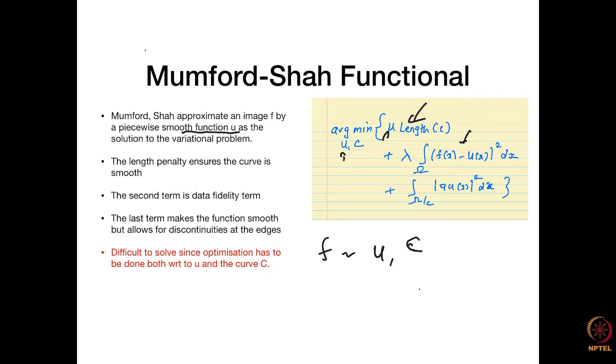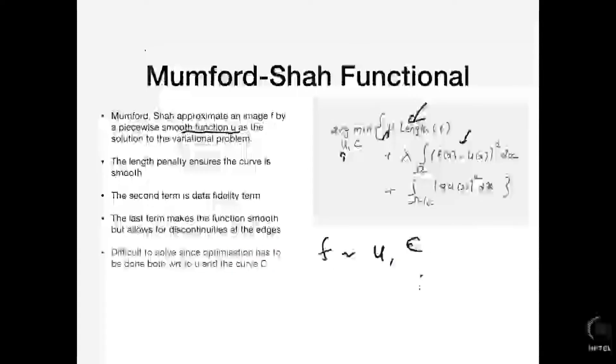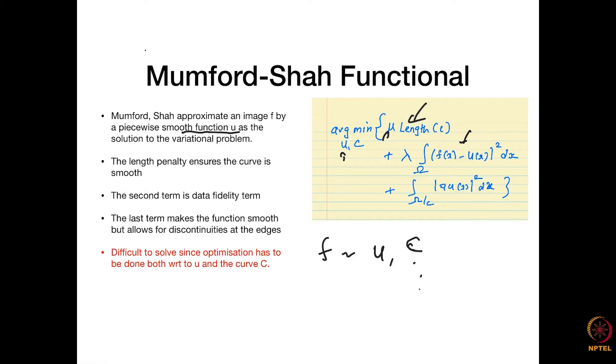Basically, what you are trying to do here is to pose image segmentation as a variational problem - a very systematic way of doing this. The segmentation is represented both by u and c - both by the approximation of f, which is u, as well as the contours that segment each of the components of u or f. This is a hard problem to solve.